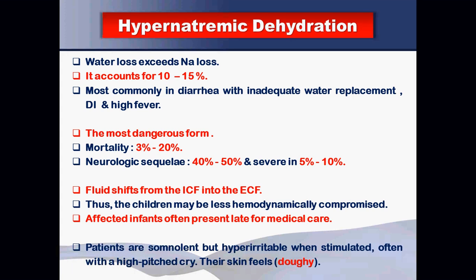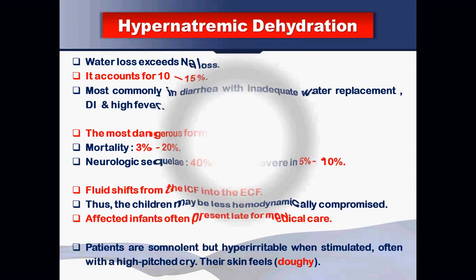Clinically, patients with hypernatremic dehydration are somnolent and lethargic, yet hyper-irritable when stimulated — they cry with a high-pitched cry that cannot be calmed. Their skin feels doughy (like al-ajeen in Arabic, or velvety) due to the relative preservation of intravascular volume from the intracellular-to-extracellular fluid shift, which maintains tissue elasticity.